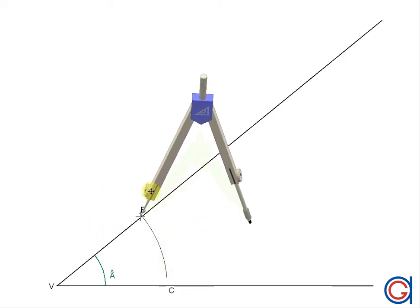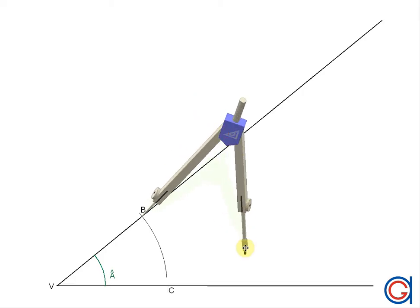Now, with our compass set to the same radius, we set it on point B and we scribe an arc as shown here.